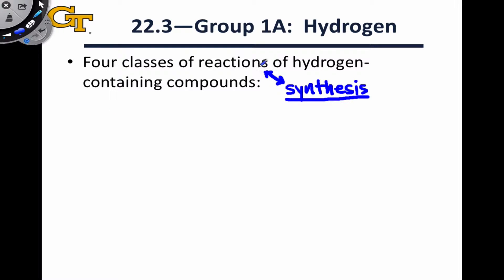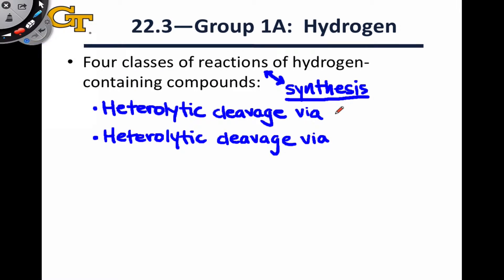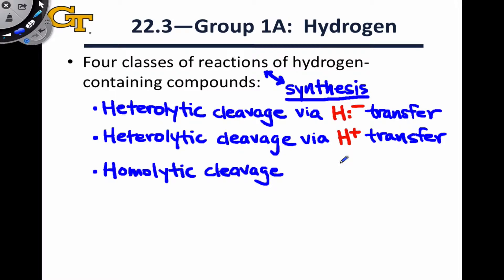We're going to look at four classes of reactions of hydrogen-containing compounds. The first two involve what is called heterolytic cleavage, either via the transfer of hydride, H- as a nucleophile, or via the transfer of H+, a proton, as an electrophile. We're also going to take a brief look at homolytic cleavage. In these reactions, hydrogen radicals, hydrogen atoms, are transferred. And finally, we're going to look at redox reactions, in which hydrogen is transferred along with electrons, and the oxidation states of atoms change.